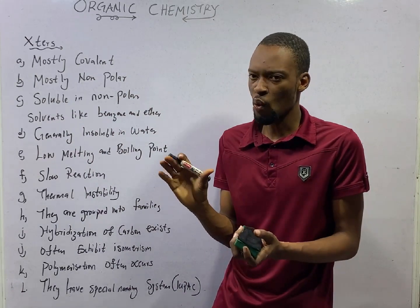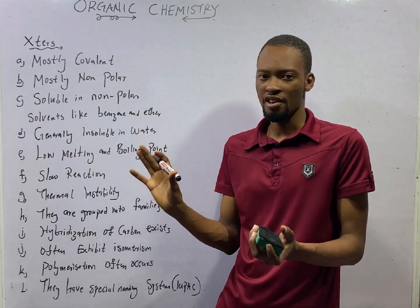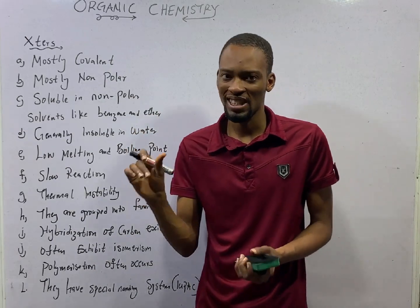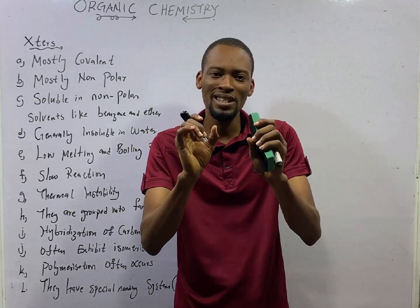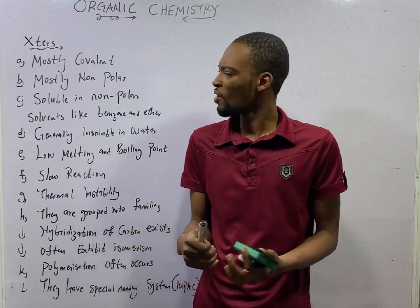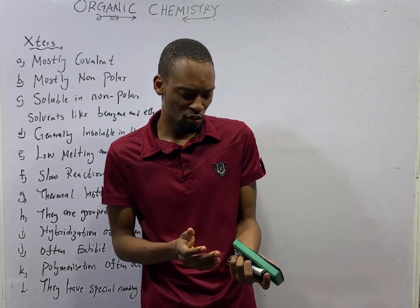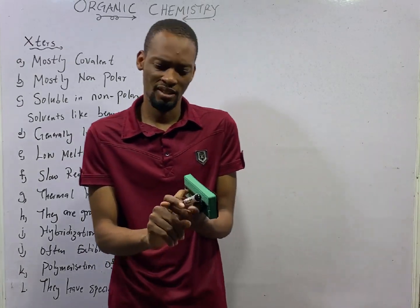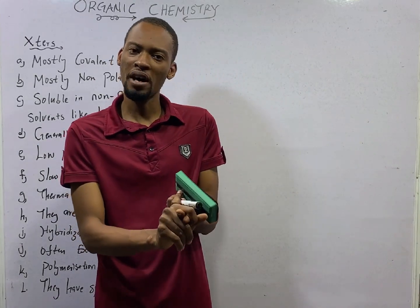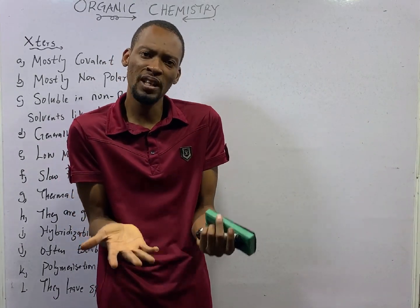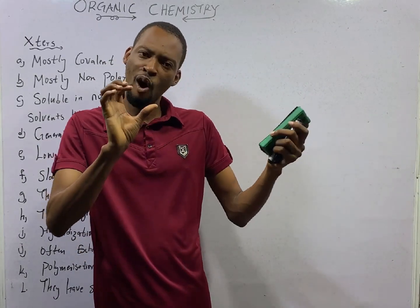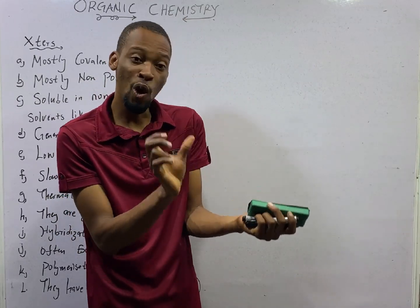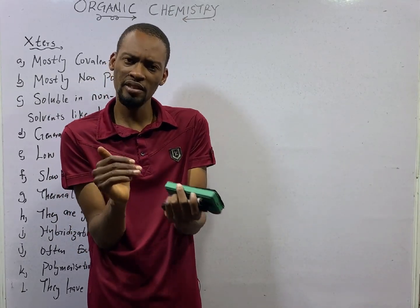These compounds — what are their general characteristics? The first is that organic compounds are mostly covalent. Under chemical bonding, we looked at electrovalent bonds, covalent bonds, Van der Waals forces. And under covalent bonds, we looked at ordinary covalent bonds and coordinate covalent bonds, also called dative bonding.